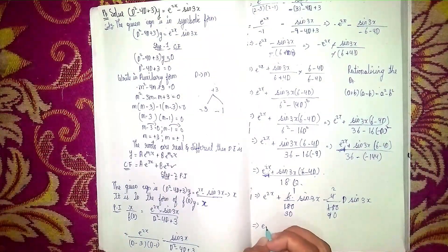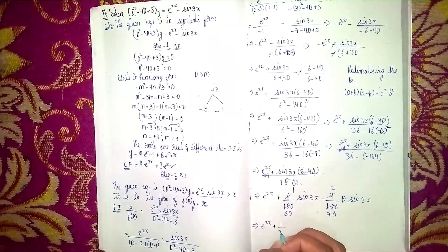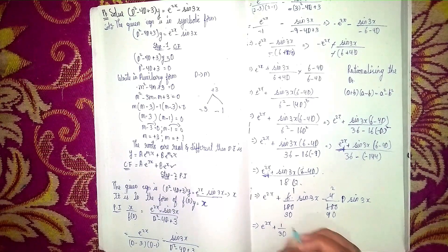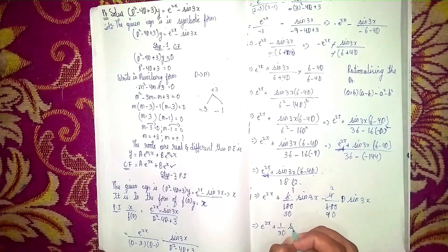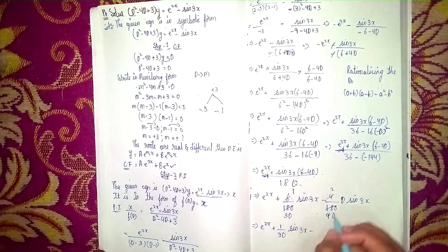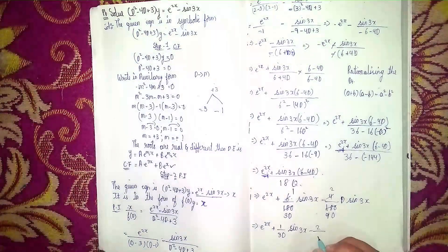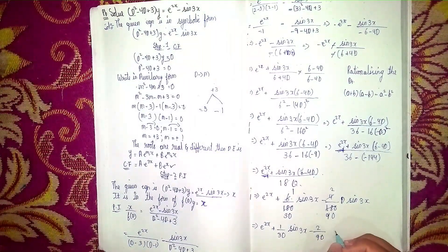So it becomes: minus e^(2x) plus (1/30)sin(3x) minus (2/90) · D·sin(3x). Here D means differentiate — we need to differentiate sin(3x).